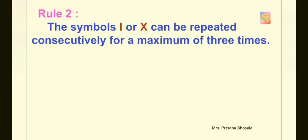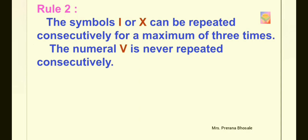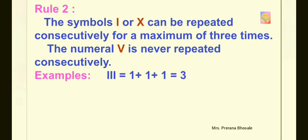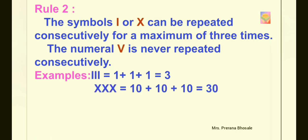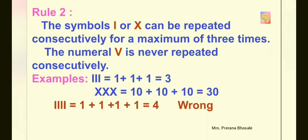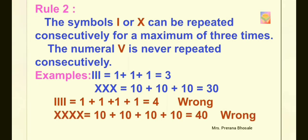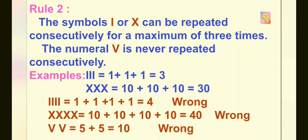Now let's move to rule number 2. The symbols I or X can be repeated consecutively for a maximum of 3 times, and the numeral V is never repeated consecutively. So you can repeat I three times to get 3, and X three times to get 30. But repeating I or X four times is not allowed. Also, V is never repeated consecutively.